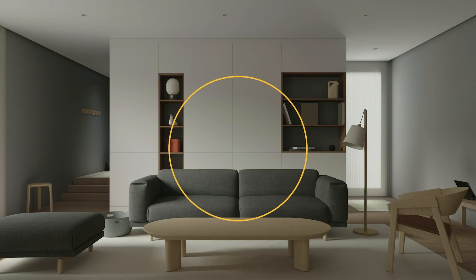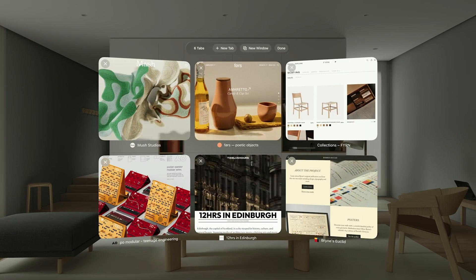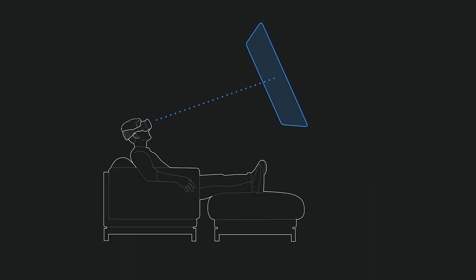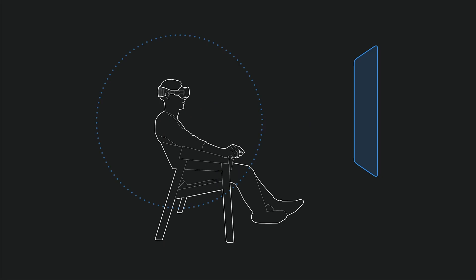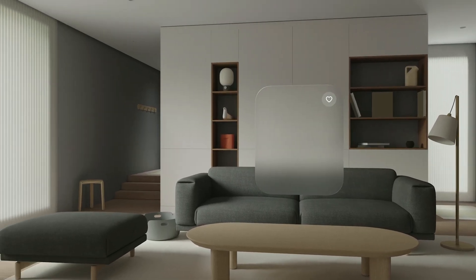Next, we emphasize human-centered design. Focus on the user's field of view and ergonomics. Content placement should align with natural sightlines and movements, ensuring comfort and accessibility. Remember, how the user interacts with the physical space is extremely important.